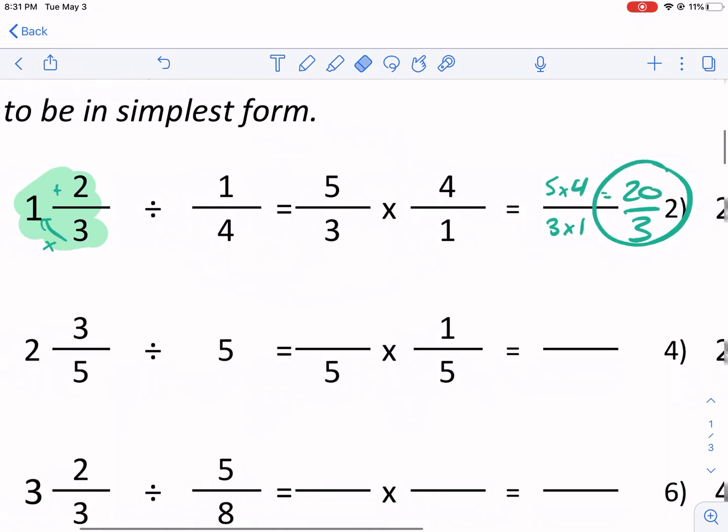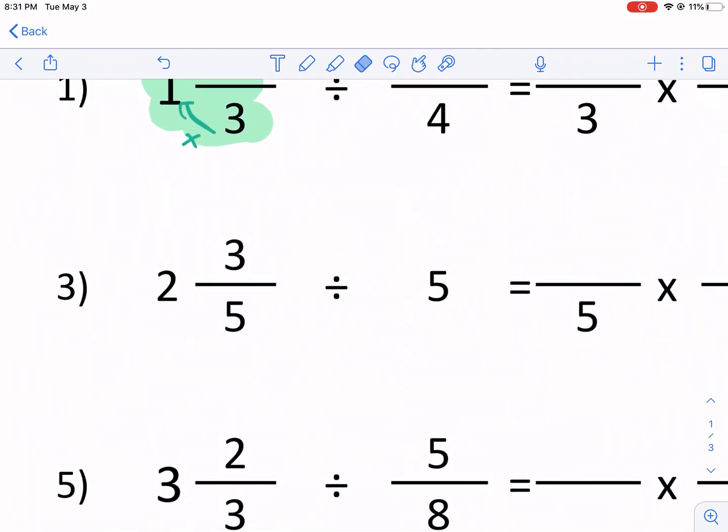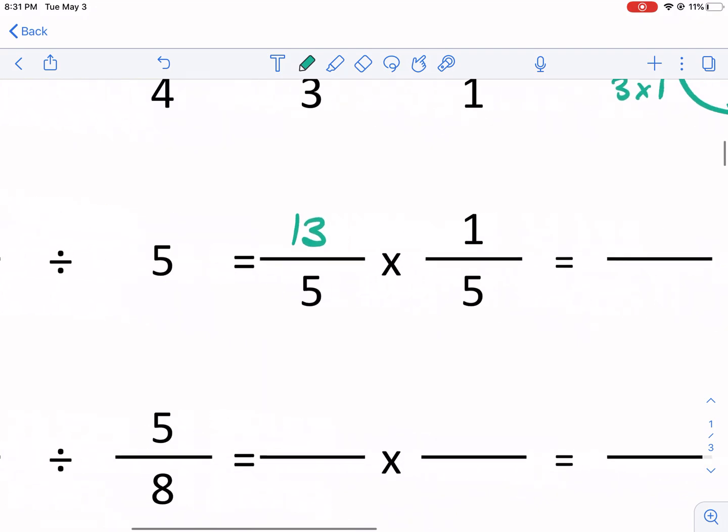Once we get to the multiplication part, honestly, it's easier than addition or subtraction of fractions. Let's go ahead and do this one. Here we have another mixed number as the worksheet would suggest. And what we're going to do is we're going to do five times the two and add the three. And that gives us 13 in the top.